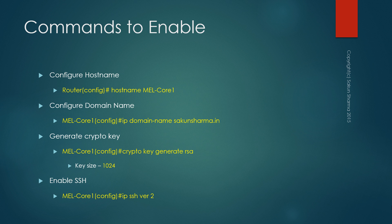So first, in global configuration mode, use the command 'hostname' and specify the name you want. Second, configure a domain name using 'ip domain-name' followed by your domain — in a production environment you'd use your organization's domain name. Third, generate a crypto key with 'crypto key generate rsa', and when prompted for key size, use 1024 bits so we can use SSH version 2. Fourth, enable SSH version 2 with the command 'ip ssh version 2'.